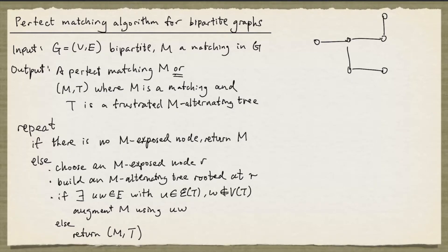We're going to look at a perfect matching algorithm for bipartite graphs. The input consists of a bipartite graph G and a matching M in G. The algorithm can start with any matching, and in practice we can start with as big a matching as we can find by inspection. The output is either a perfect matching, or a pair M, T where M is a matching and T is a frustrated M-alternating tree.